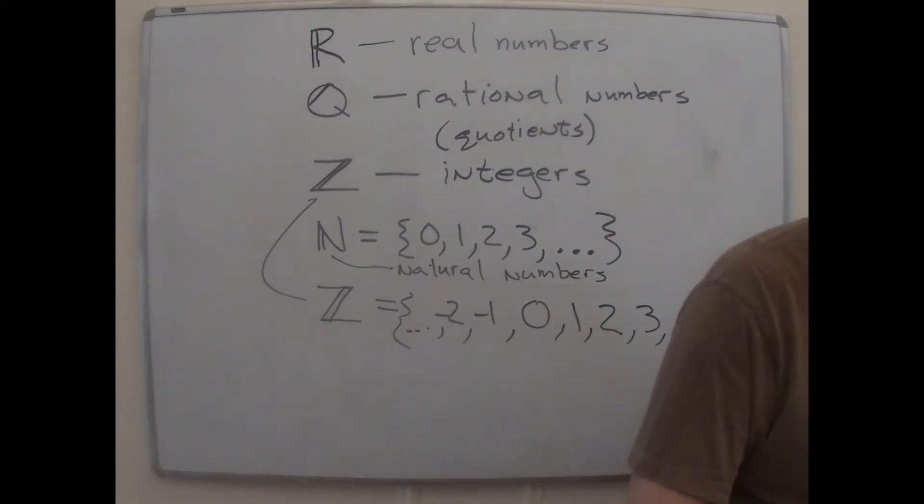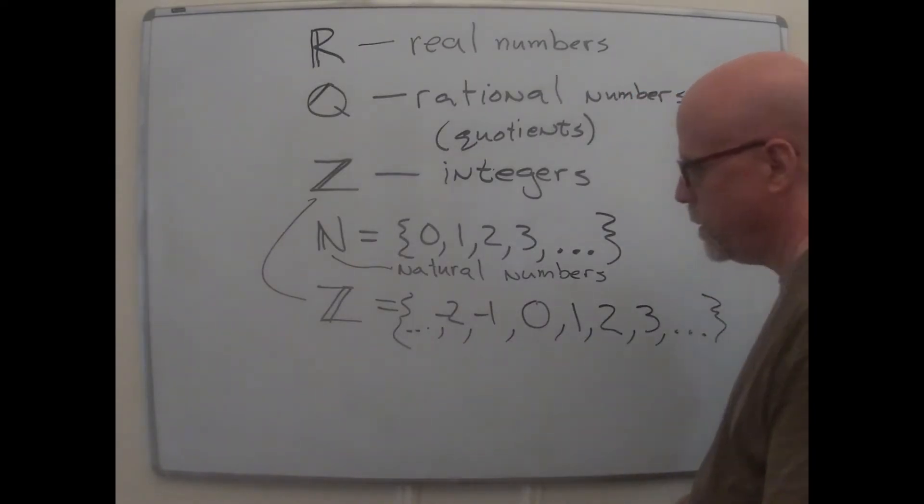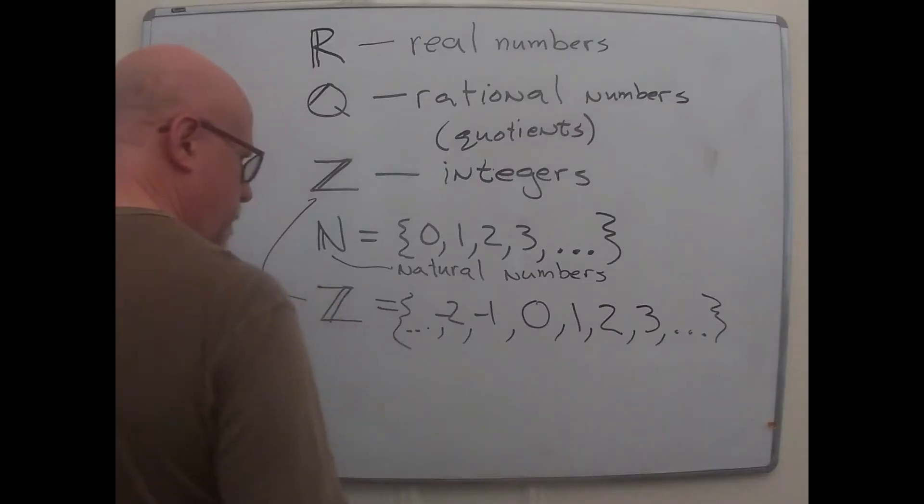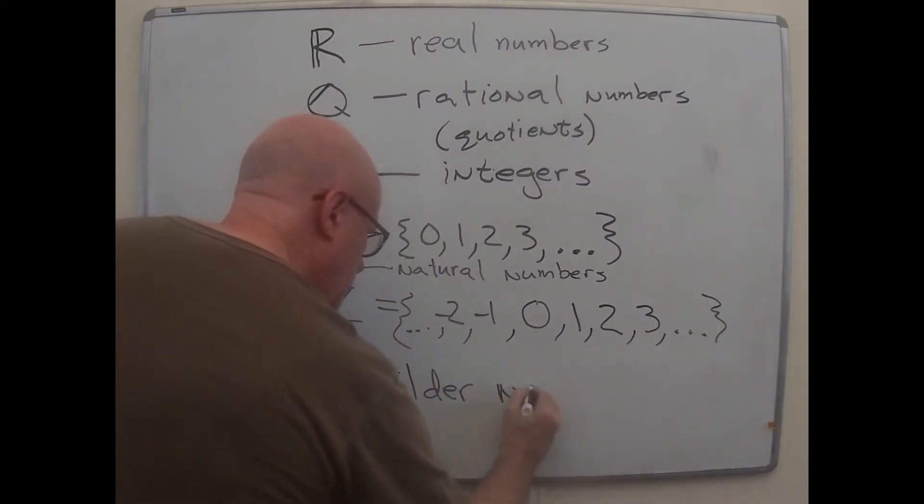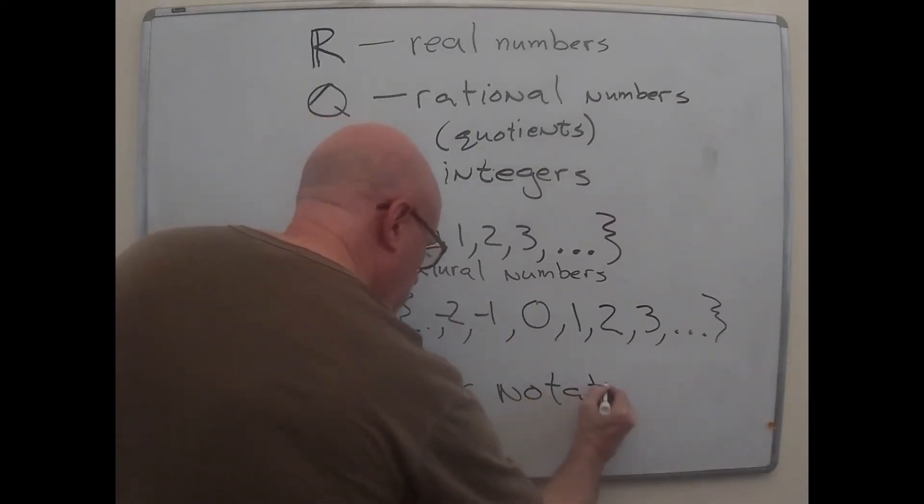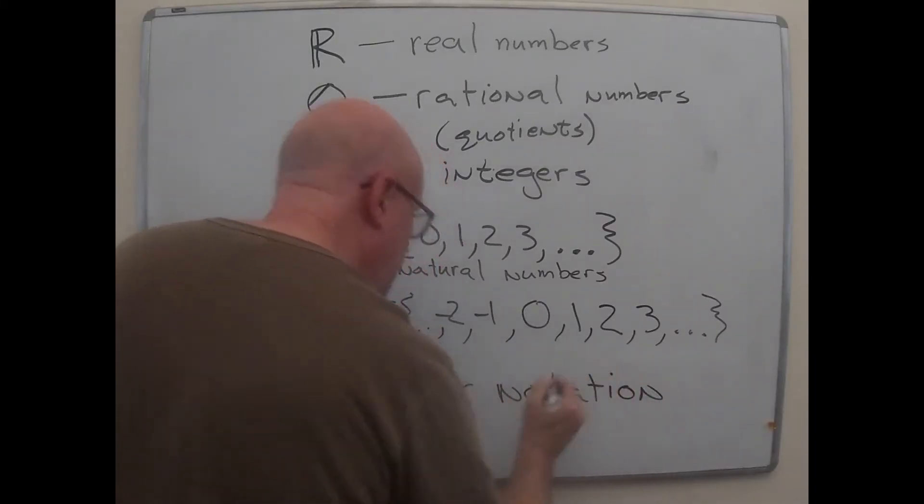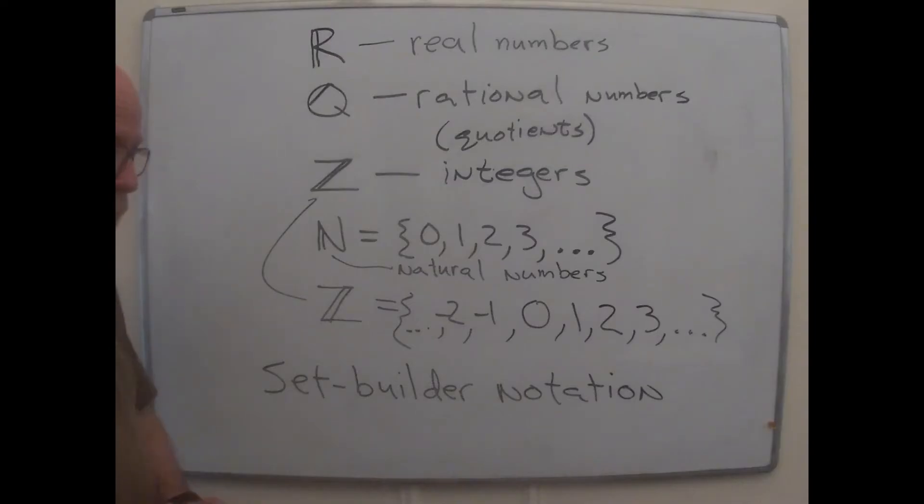All right, there is another way to describe a set, which is, I'm going to start down here, and we'll have to erase and continue. But it's called set builder notation. And in set builder notation, you don't have to just list everybody, but rather you sort of give a criterion for, is a thing in the set? If it satisfies the criterion, it will be in the set. And if it doesn't, it won't be.